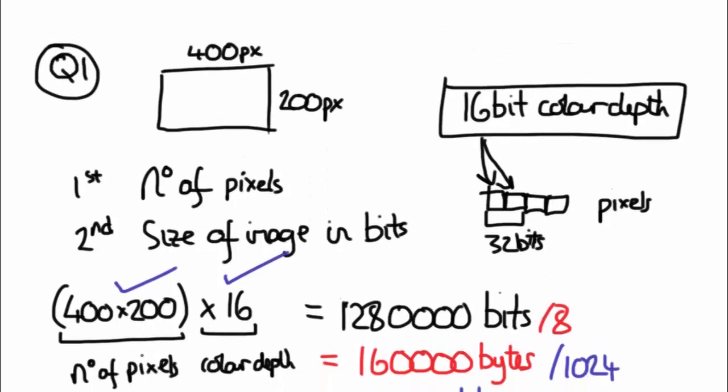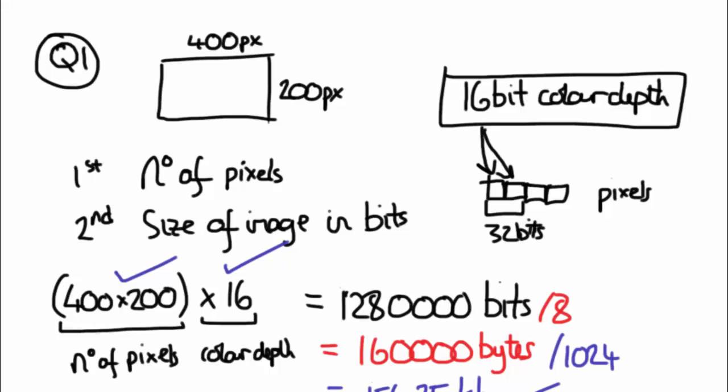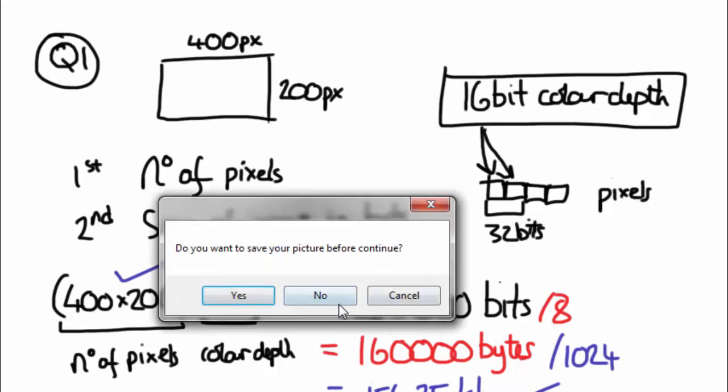That's the first type of question, so that's the easier one. Another type of question is question 2.